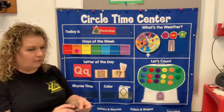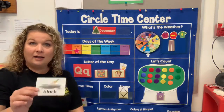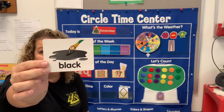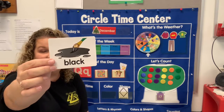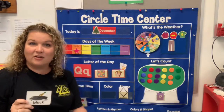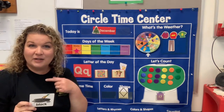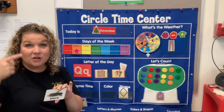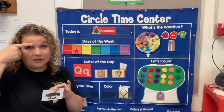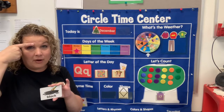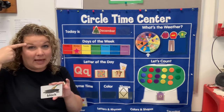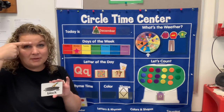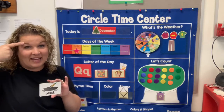What is our color? Black — that's the color my shirt is. In sign language, we take our finger, put it on our eyebrow, and go black. Do it with me — black!